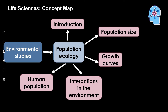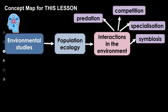Let's have a look at our concept map. We can tick off quite a few sections from previous lessons, and this is where we're focusing today — interactions in the environment. Let's break down that broad topic. We're going to be looking at predation, competition, specialization, and symbiosis.